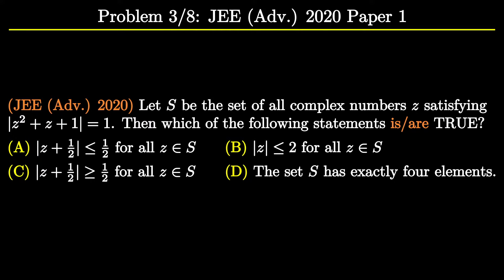We are given a set S of complex numbers satisfying |z² + z + 1| = 1. We need to choose the right options out of the given four options.